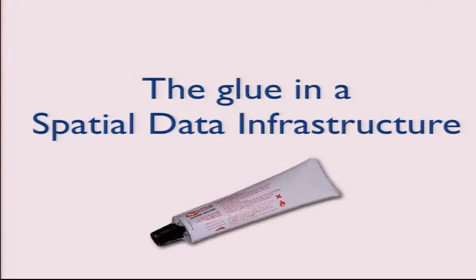I think that catalogs, in a way, are the glue in the spatial data infrastructure. They describe datasets, data services, web map services, feature services, and download services. Without proper descriptions, they become really hard to find and understand. That's essentially what GeoNetwork does.